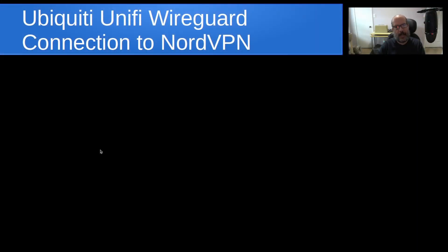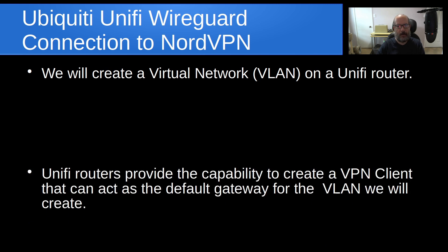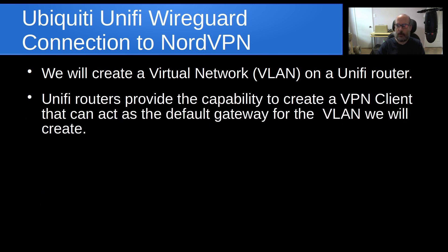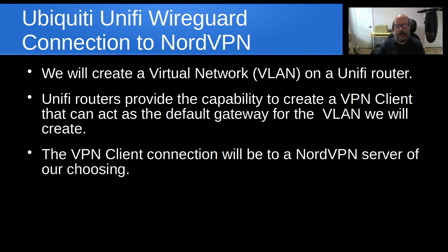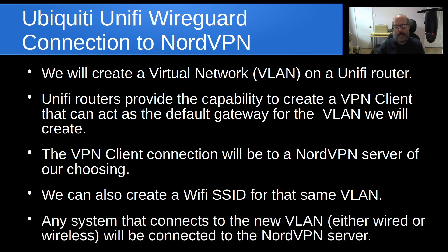We're going to look at taking a Ubiquiti UniFi router and using it in conjunction with a WireGuard connection over to a NordVPN public VPN server. We're going to create a virtual network, otherwise known as a VLAN, on our UniFi router. UniFi routers provide the capability to create a VPN client that can act as a default gateway for the VLAN we're going to create, and the VPN client will connect to a NordVPN server of our choosing. Any system that connects to the new VLAN, either wired or wireless, will be connected through that NordVPN connection.